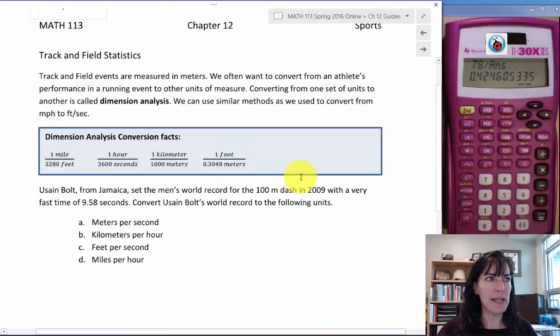Here's what I'll give you on a test. One mile is the same as 5280 feet, one hour is the same as 3600 seconds. We used both of those with the tennis statistics for the serve speeds. And then in addition, we have some conversions. One kilometer is the same as 1000 meters, and one foot is the same as 0.3048 meters. Now, with these conversion facts...